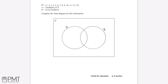Any multiples of 3 will be placed in this section here. Any even numbers will be placed in this section here. And any even numbers which are also multiples of 3 will be placed in this central section here. Any numbers which do not fit into any of these categories will be placed outside the circles but still inside this rectangle.